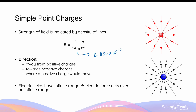Here, r is the distance at which you're measuring the field strength away from the charge. The field strength of the point charge is inversely proportional to the distance away from the charge squared. The further away you are from the charge, the weaker the field strength becomes.